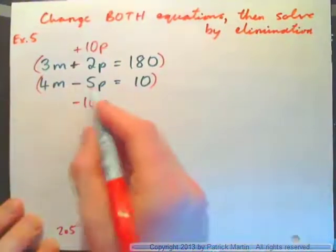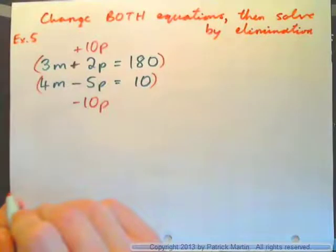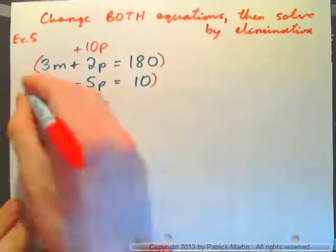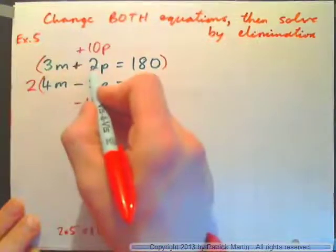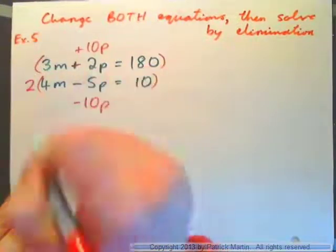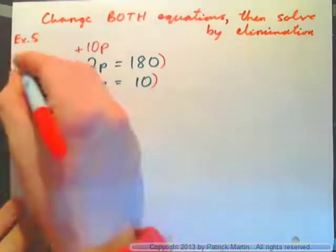So how do you, what do you multiply negative 5 by so it becomes negative 10? 2, right? And what do you multiply positive 2 by so it becomes positive 10? Well, positive 5, right?